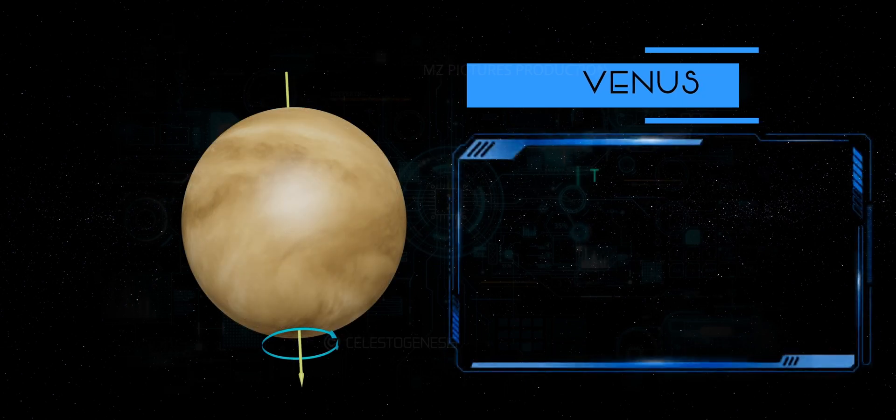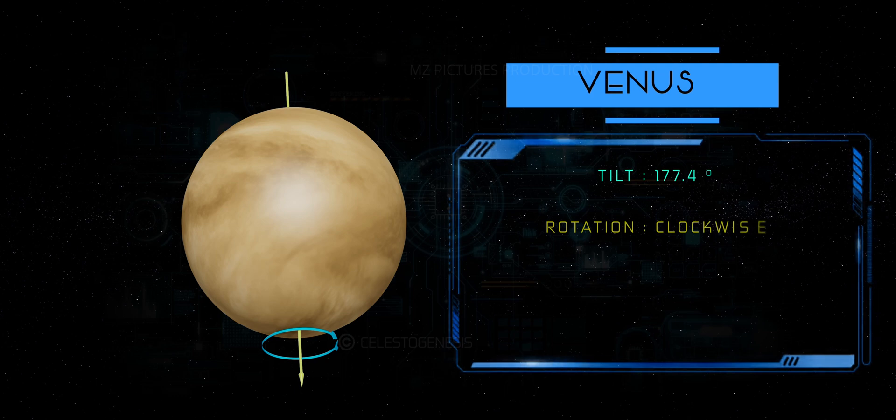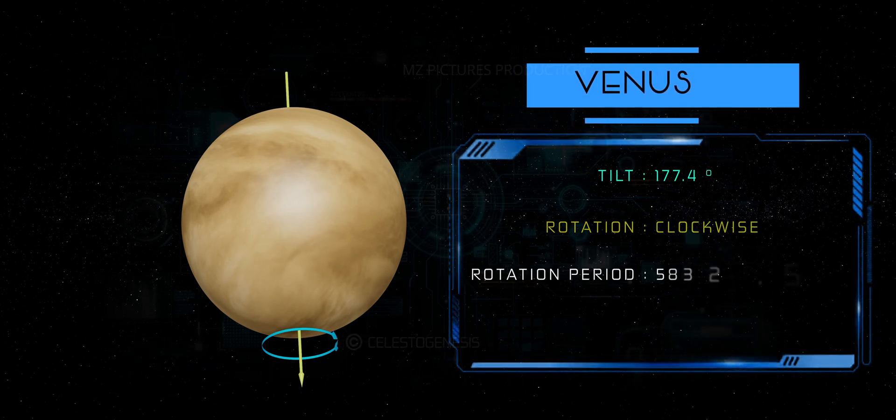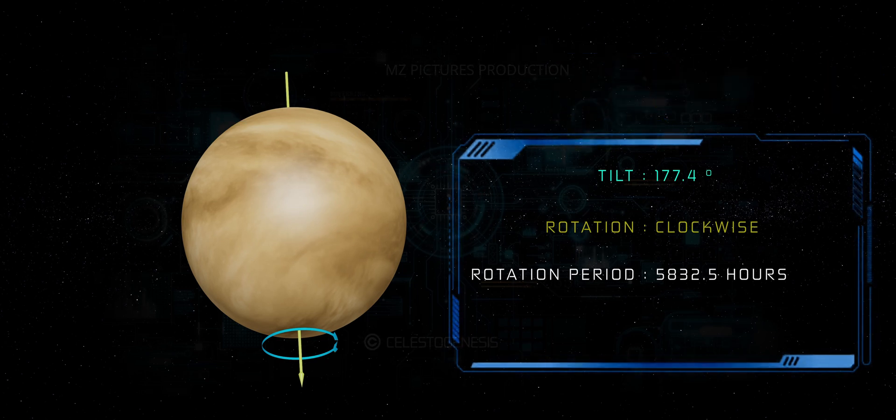Venus. Venus has a retrograde rotation, spinning clockwise when viewed from above its north pole. It takes about 243 Earth days to complete one rotation, which is longer than its orbital period around the sun.